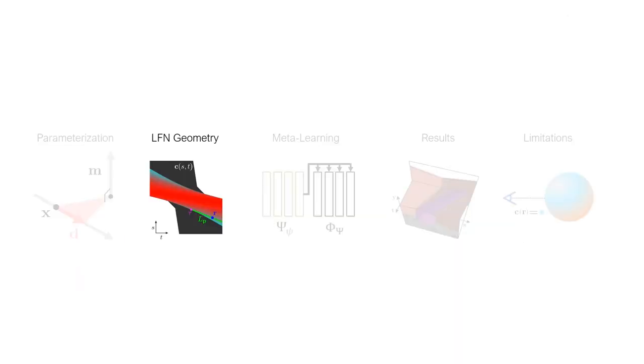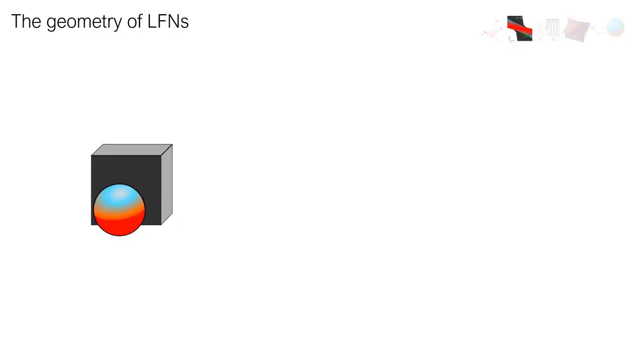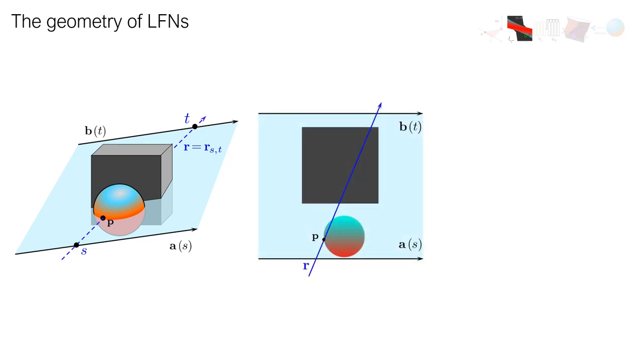We now discuss how lightfields encode the geometry of the underlying 3D scene. To get some intuition, consider this 3D scene and slice the scene along a plane containing a ray R, which hits the scene at a point P. We can parametrize the rays in this plane by their intersections with two lines with coordinates s and t, respectively.